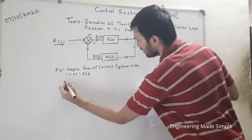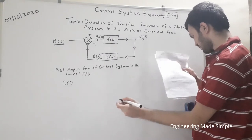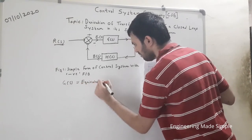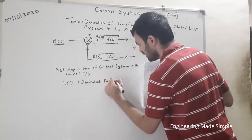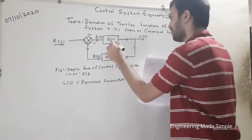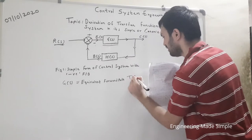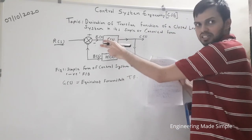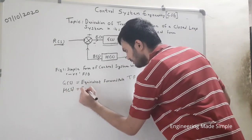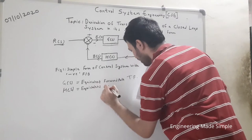G(s) is the equivalent forward path transfer function — the Laplace transform of the forward path element. This block represents a transfer function and is called the forward path transfer function because this element is present in the forward path. Similarly, H(s) is the equivalent feedback path transfer function.